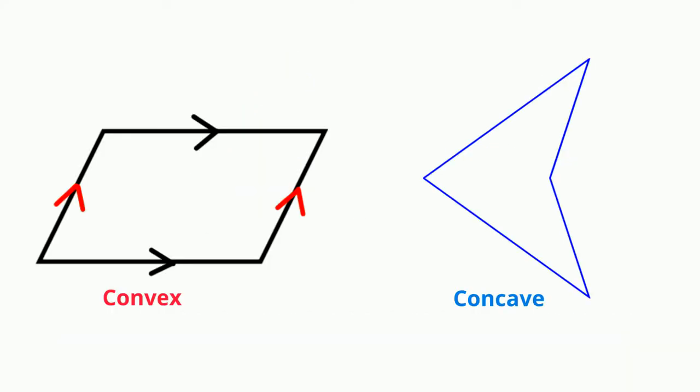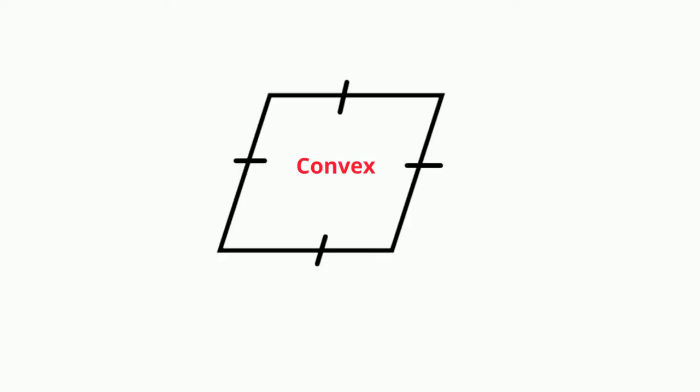Another way you can tell the difference between convex and concave quadrilaterals is if you extend the sides of a convex quadrilateral, the lines will be outside the center of the quadrilateral.